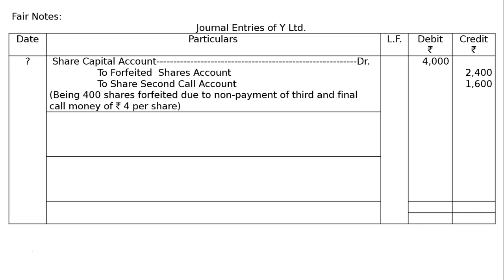It should be Share Third and Final Call Account — I am extremely sorry for the error, but the narration is written correctly. The amount not received is 400 into 4, that is rupees 1600, being 400 shares forfeited due to non-payment of third and final call money of rupees 4 per share.